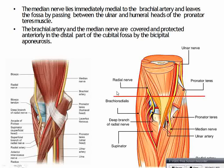The median nerve lies immediately medial to the brachial artery and leaves the fossa by passing between the ulnar and humeral heads of pronator teres. Pronator teres has two heads: the ulnar head originating from the ulna and the humeral head originating from the humerus. The brachial artery and the median nerve are covered and protected anteriorly in the distal part of the cubital fossa by the bicipital aponeurosis.